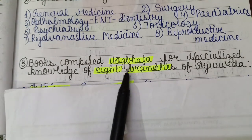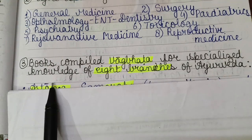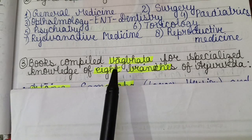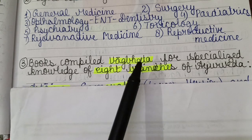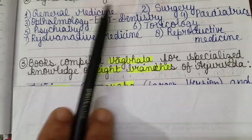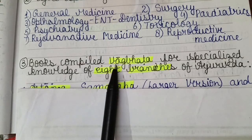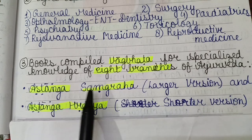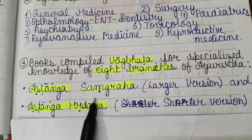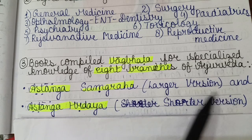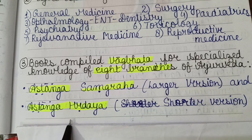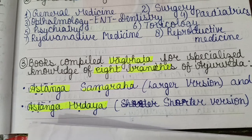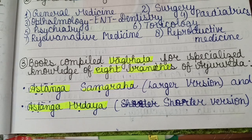The book compiled by Vagbhata covers specialized knowledge of all eight branches of Ayurveda. Vagbhata wrote two books: the first is the Ashtanga Sangraha, which is the larger version, and the second is the Ashtanga Hridaya, which is the shorter version. Both books by Vagbhata are related to the eight branches of Ayurveda.